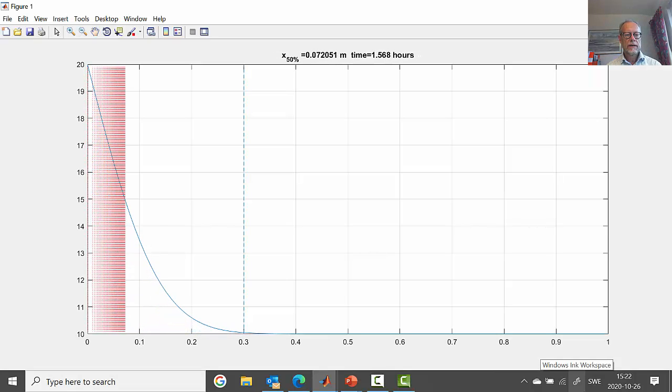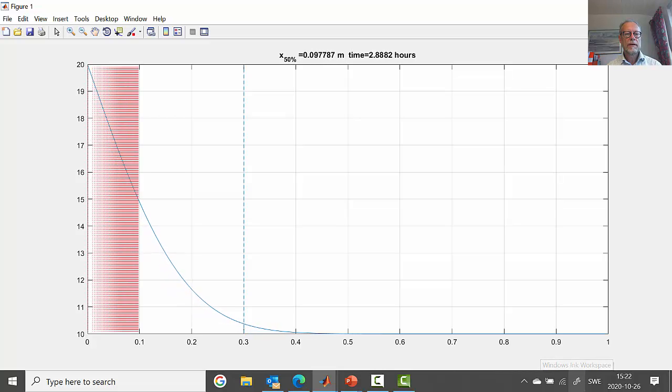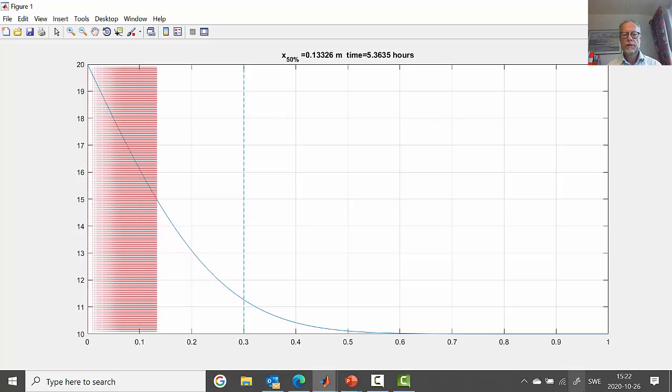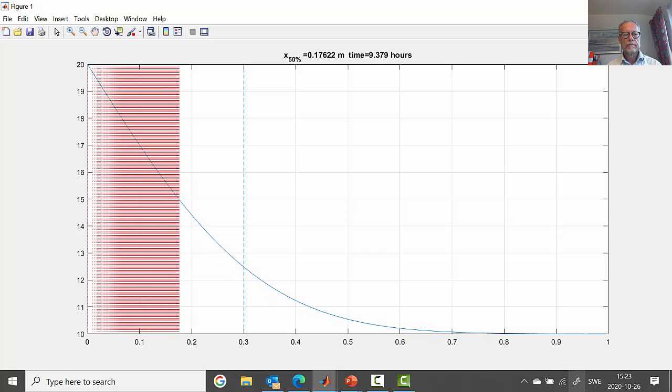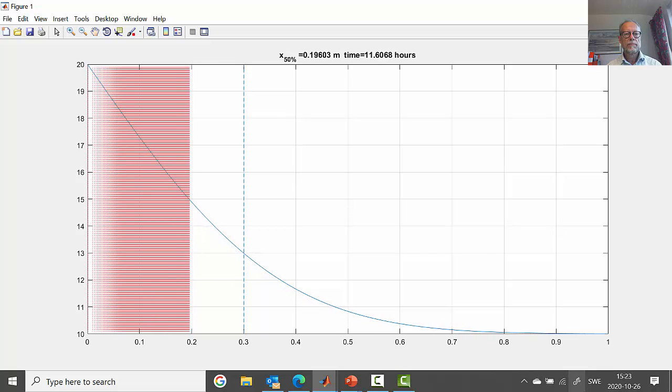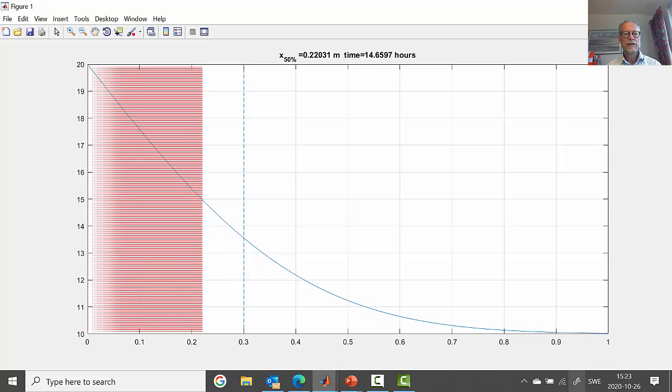Now we see a simulation of how the temperature front is moving into, this 50% front is moving into the material. On the vertical axis we have the temperature. We see the temperature in the whole object, this is the blue line, and the red front is moving forward, this is the 50% change position.